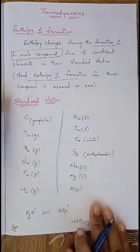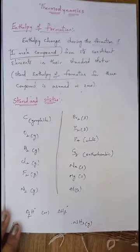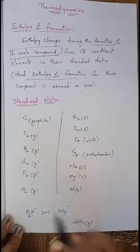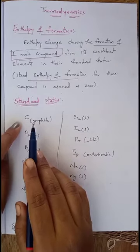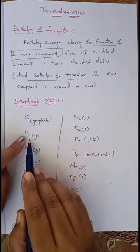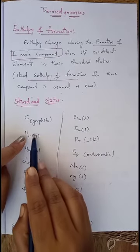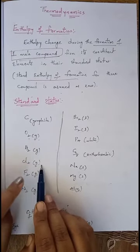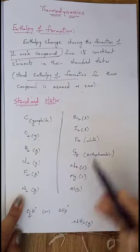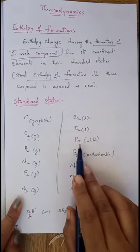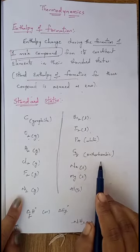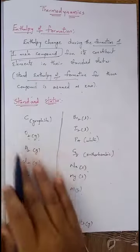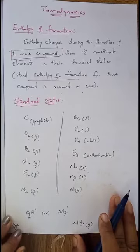Now we will see the standard states of those elements. Carbon in nature exists in the form of graphite. Oxygen, hydrogen, chlorine, fluorine, and nitrogen exist in gaseous state as O2, H2, Cl2, F2, and N2 gas respectively. Bromine is Br2 liquid, iodine is I2 liquid. Phosphorus is P4 white, sulfur is S8 orthorhombic. Sodium, magnesium, and aluminum exist in solid state.